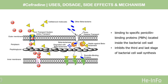Mechanism of Action. Cephradine is a first-generation cephalosporin antibiotic with a spectrum of activity similar to cephalexin. Like the penicillins, it is a beta-lactam antibiotic. By binding to specific penicillin-binding proteins (PBPs) located inside the bacterial cell wall, it inhibits the third and last stage of bacterial cell wall synthesis. Cell lysis is then mediated by bacterial cell wall autolytic enzymes such as autolysins. It is possible that Cephradine interferes with an autolycin inhibitor.